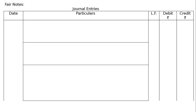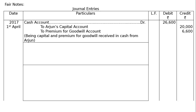Journal entries with proper format — date, particulars, ledger folio, debit and credit columns with Rs. symbol. 1st April 2017: Cash account debited Rs. 26,600; to Arjun's capital account Rs. 20,000, to premium for goodwill account Rs. 6,600. Being capital and premium for goodwill received in cash from Arjun.